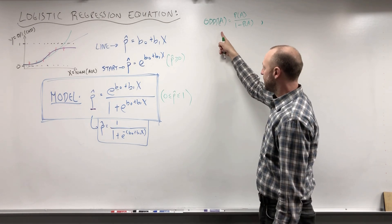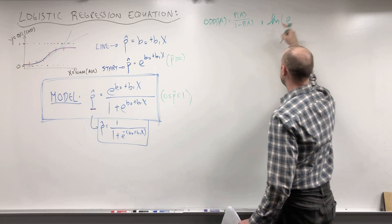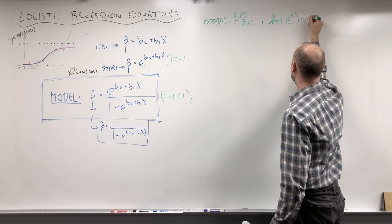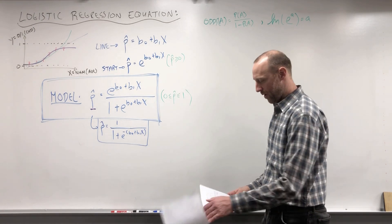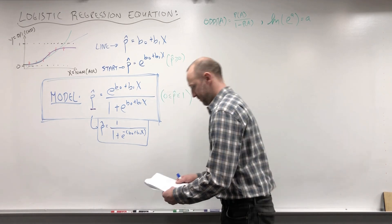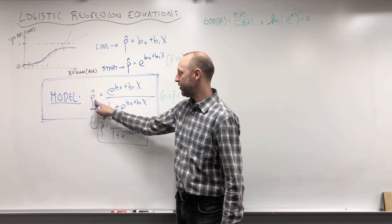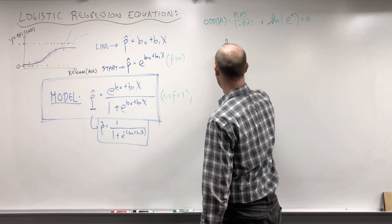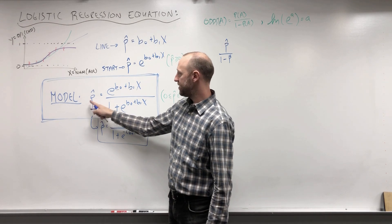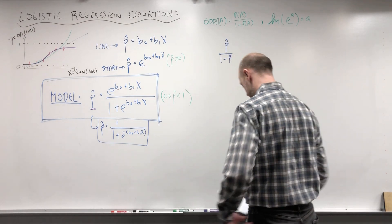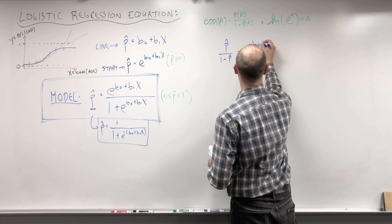Odds and probability are related but not the same thing. The second property: the natural logarithm of e to the power of a is simply a — the log is the anti-exponent. We're going to make use of those two properties. Starting with the logistic model, I'm going to take the odds of both sides: rather than looking at the probability of the disease, I'll look at the odds of the disease — P-hat over 1 minus P-hat. If you take the odds of the right-hand side, it simplifies to e to the B-naught plus B1·X.